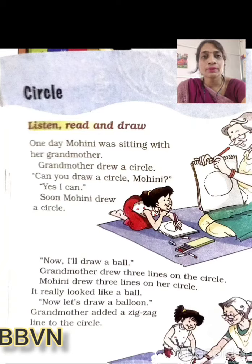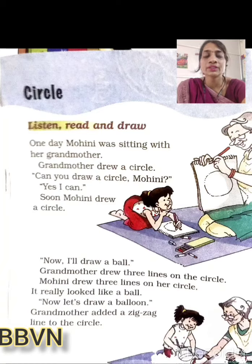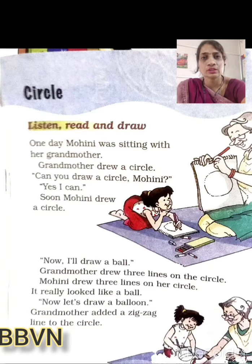So ab is chapter mein circle ke baare mein kya bataaya gaya hai, vho hum padhenge. Take a pencil so that you can underline new words. Pencil aapko hamesha jab bhi hum chapter reading karenge, you have to keep the pencil in your hand, taaki aap new words ko underline kar sako aur unhe learn kar sako. So let's start the reading.